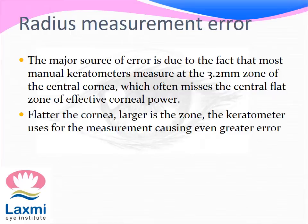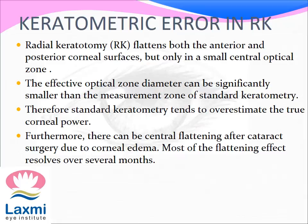The error in measuring the radius of curvature is a major source of error. Most manual keratometers measure at the 3.2 mm zone of the central cornea, which often misses the central flat zone of effective corneal power. However, the flatter the cornea, the larger the zone the keratometer uses for measurement, causing an even greater error.